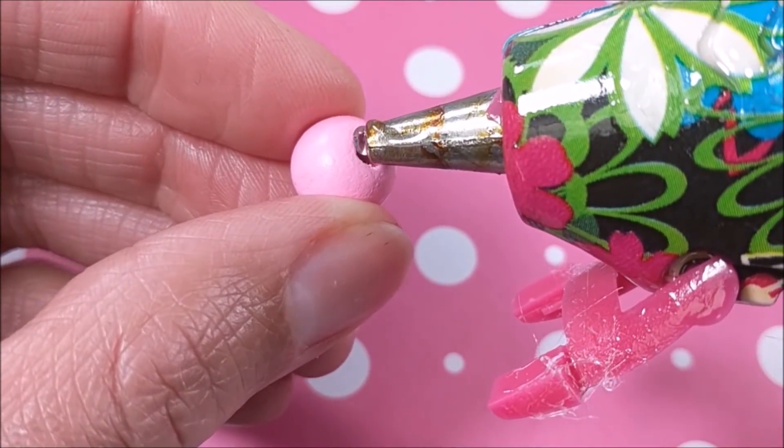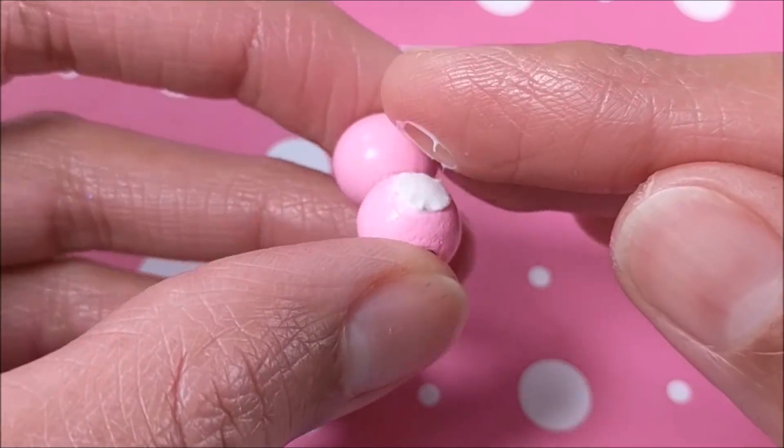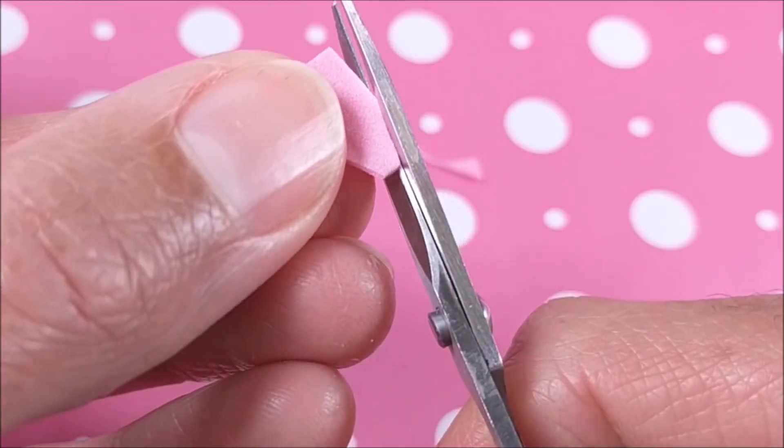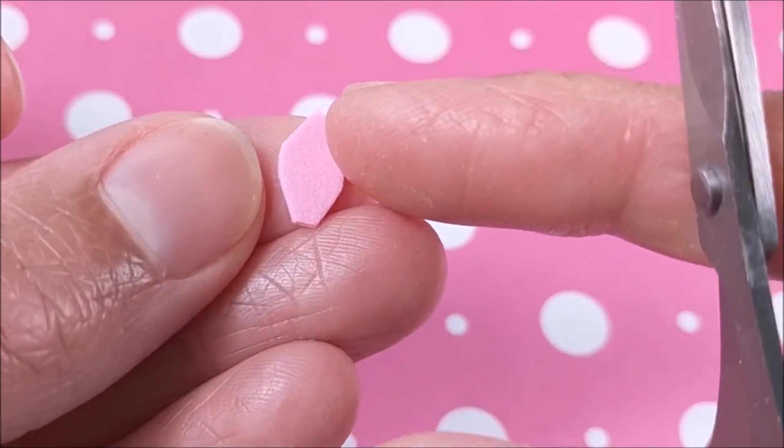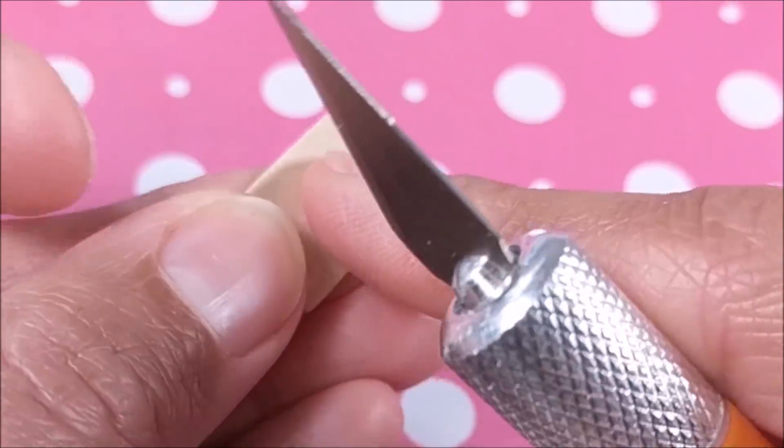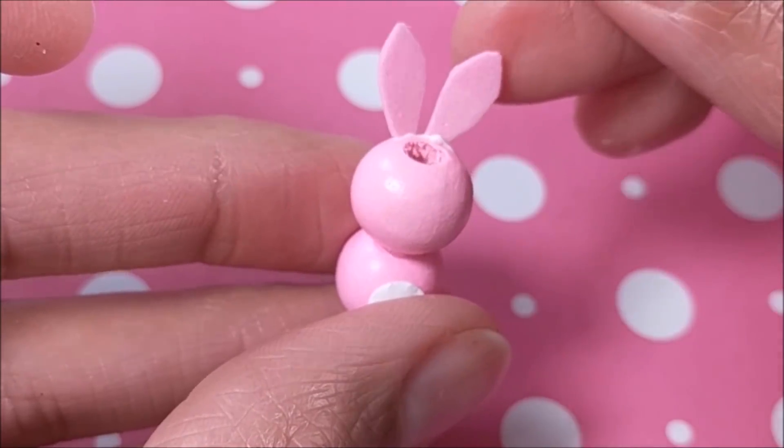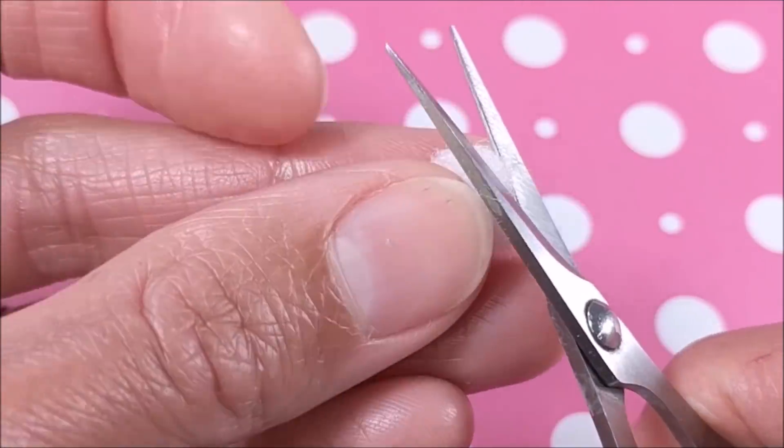And for the bunny soap dispenser, I glue two beads, add a paper belly, craft foam ears, and a pom-pom tail.